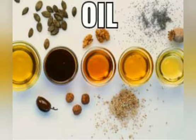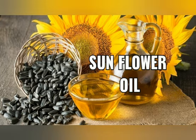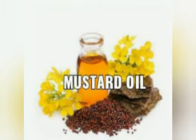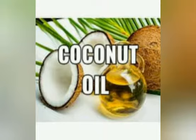Next, oil. Plants give us oil. We need oil for cooking. We get oil from seeds and fruits of plants such as groundnut, sunflower, coconut, mustard and olive, etc.